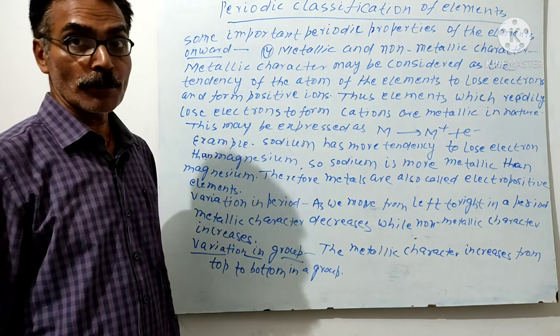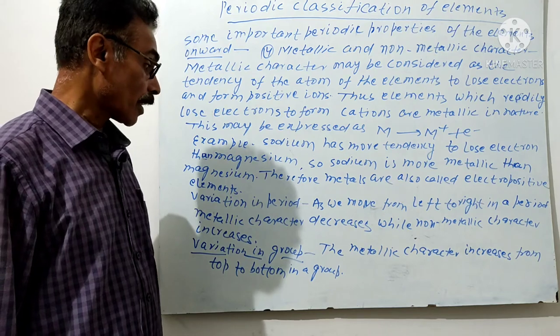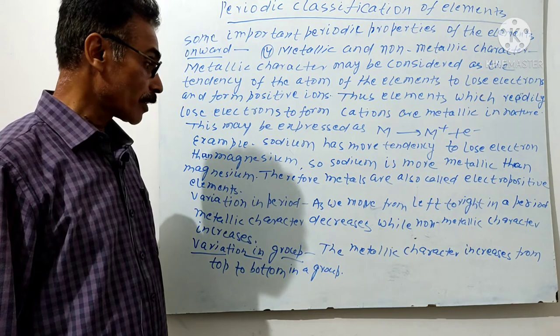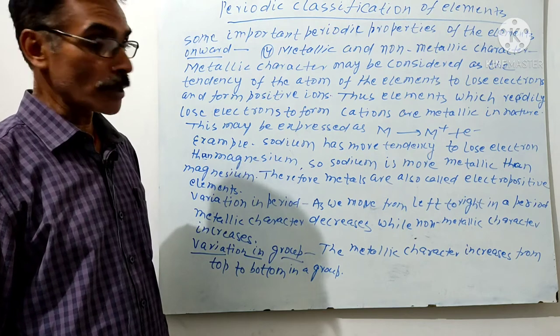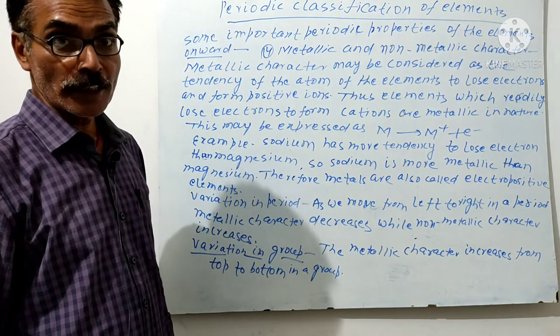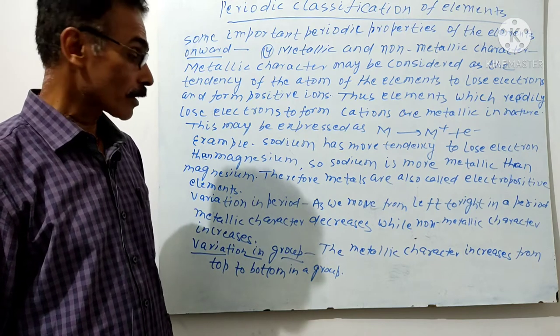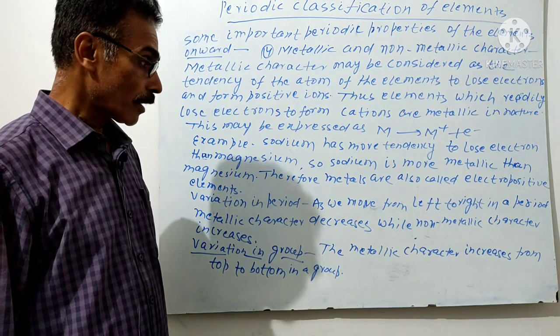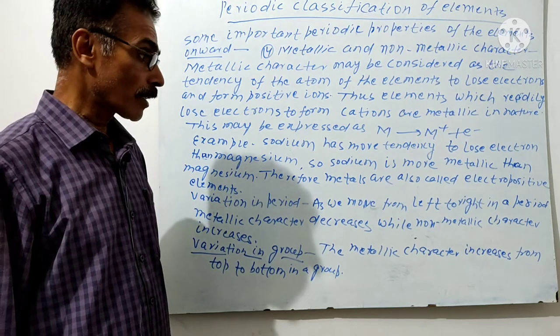Now the trend of metallic character across the period. As we move from left to right in a period, metallic character decreases while non-metallic character increases. In a group moving downward, metallic character increases.